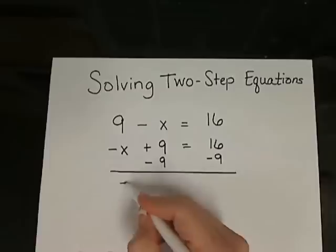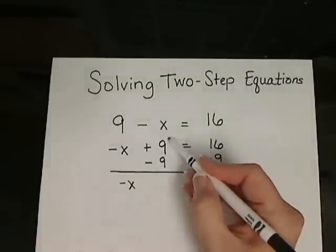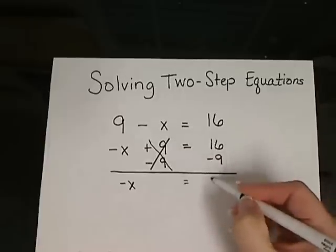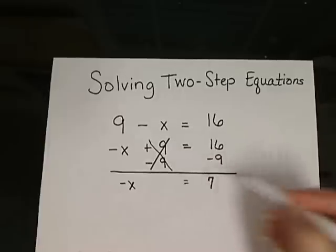This will leave me with negative x. The plus 9 minus 9 cancel each other out. So we have negative x is equal to 16 minus 9 which is 7.